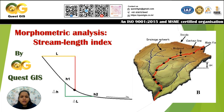Morphometric parameters refer to the quantitative measurements of landforms and their features. These parameters help scientists understand the shape, size, and distribution of landforms as well as the processes that shape them. They are categorized into three main types: linear (measuring length and arrangement of features like rivers — e.g., stream order, stream length, drainage density), areal (calculating area and shape of landforms — e.g., basin area, perimeter, shape index), and relief aspects.